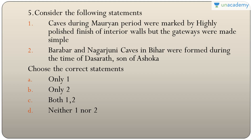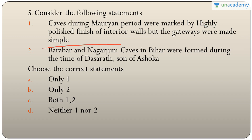Question five: statements about caves during the Mauryan period — interior walls had a highly polished finish, but the gateways were made simple. The first part is true, but the gateways were also very well decorated, not simple — so statement one is incorrect. Barabar and Nagarjuni caves in Bihar were formed during the times of Dasharath, son of Ashoka. The answer is B — only two.